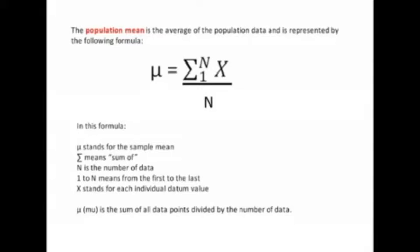Mu stands for the population mean. You see that little squiggle thing there? That's a Greek letter mu. We nerds use a lot of Greek letters because we want to keep the non-nerds from being able to survive in this environment. That big squiggly sideways M is the Greek letter capital sigma, which means sum of. So mu is equal to the sum of all data from the first to the last, where capital X stands for each individual datum value. Remember, datum is singular, data is plural. So mu is equal to the sum of all the datum divided by the number of data. That sounds a lot easier, doesn't it? The formula is not that bad.